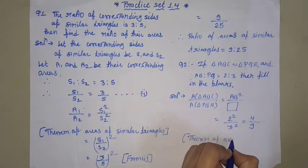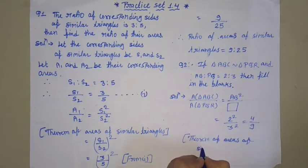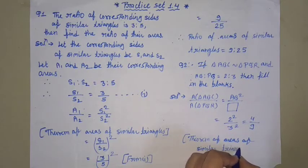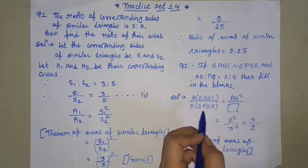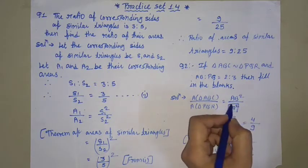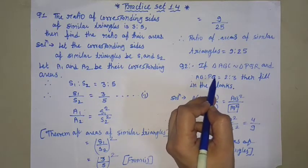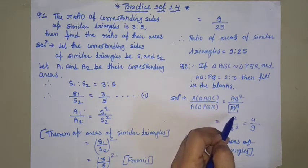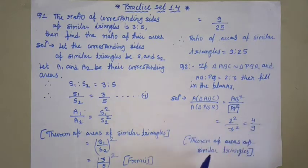By the theorem of areas of similar triangles: area of triangle ABC divided by area of triangle PQR equals AB squared divided by PQ squared. AB equals 2, so AB squared equals 4; PQ equals 3, so PQ squared equals 9. Therefore, the answer is 4 is to 9.